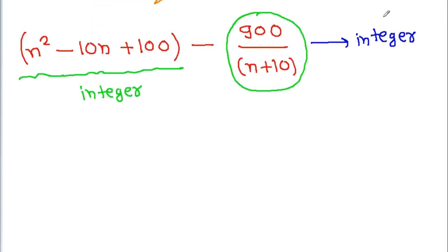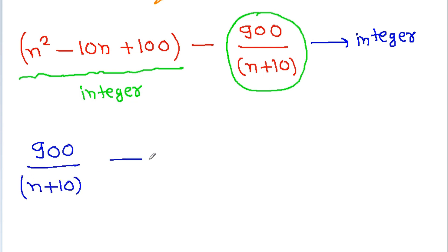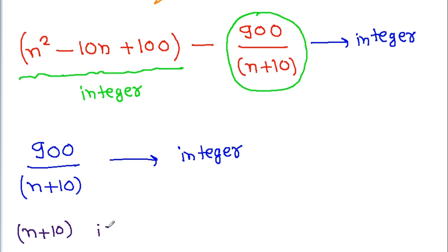So from here, we get that 900 / (n + 10) is an integer only if (n + 10) is a factor of 900. Therefore, (n + 10) must be a factor of 900.